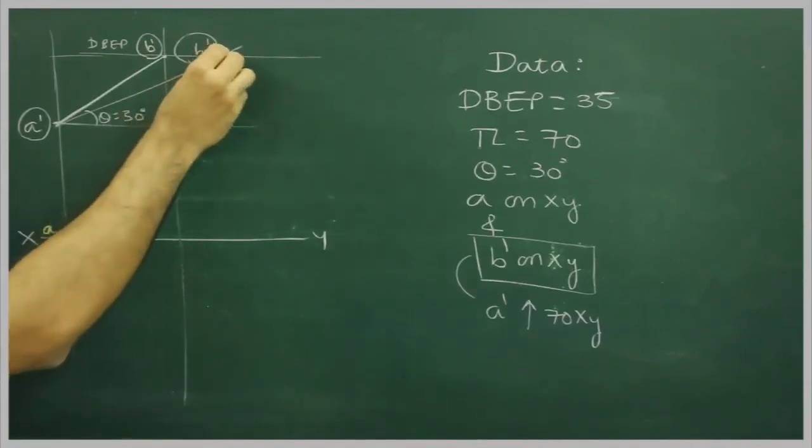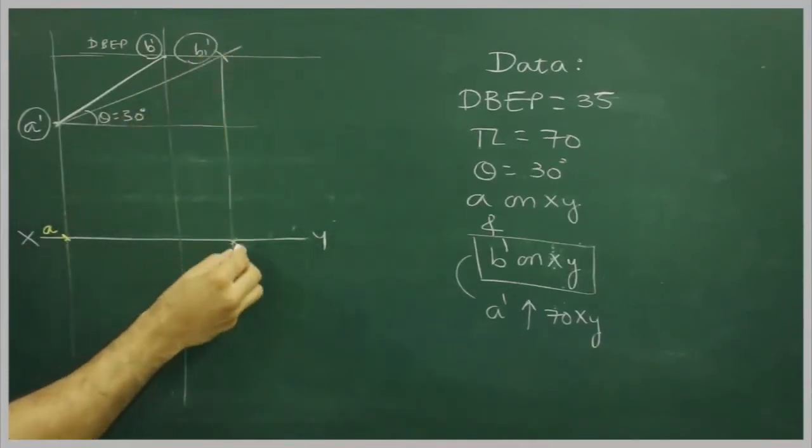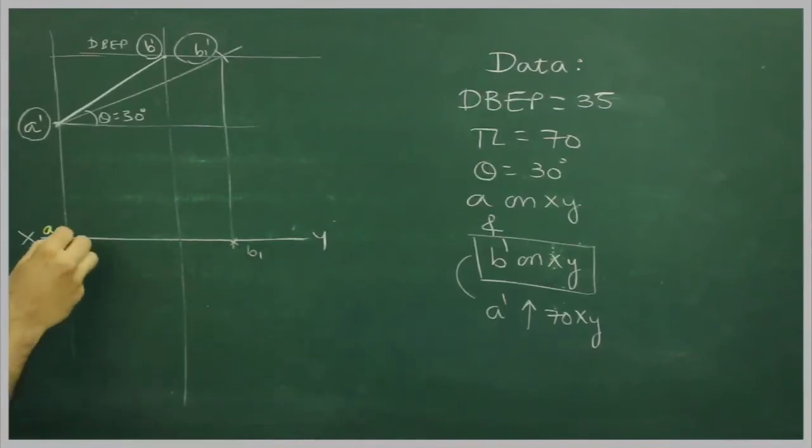I can project B'' straight down, wherever it will cut, that would be B. I will take A to B'', I will take A' to B'' and I will rotate. So wherever it will cut, that would be B'.